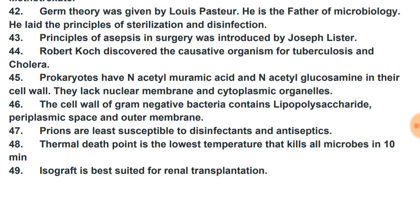Robert Koch discovered the causative organisms for tuberculosis and cholera. Prokaryotes have N-acetyl muramic acid and N-acetyl glucosamine in their cell walls, and they lack nuclear membrane and cytoplasmic organelles. The cell wall of gram-negative bacteria contains lipopolysaccharide, periplasmic space, and outer membrane.